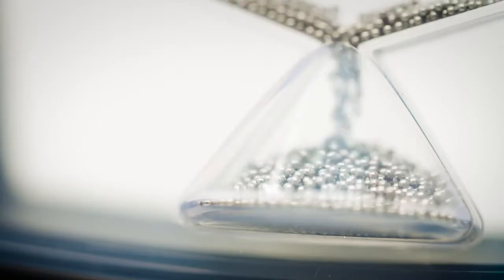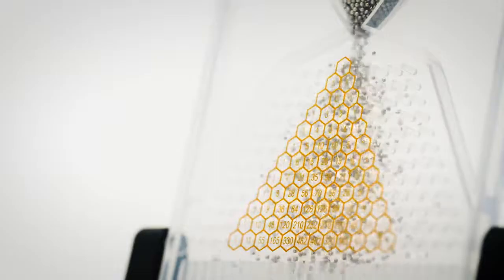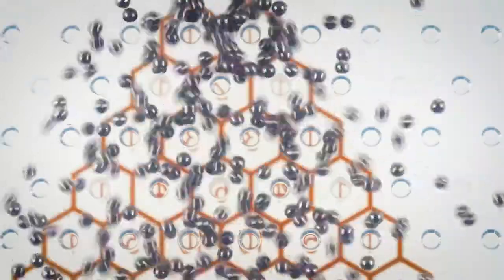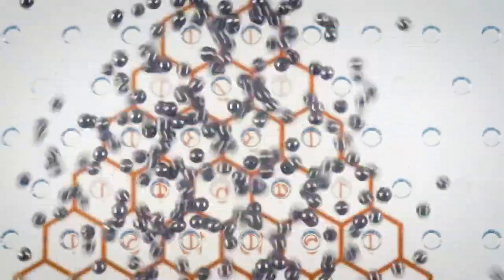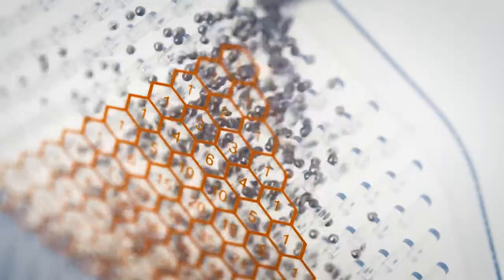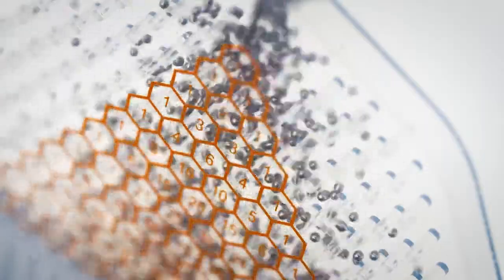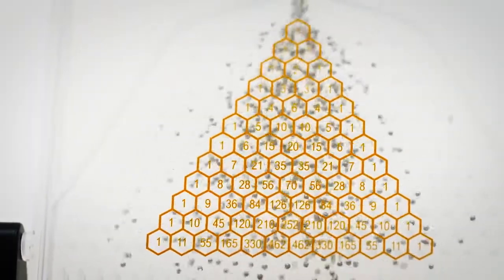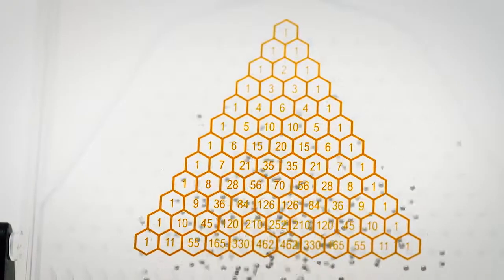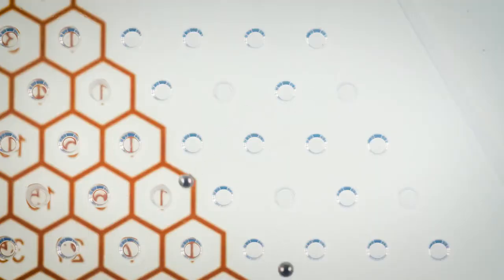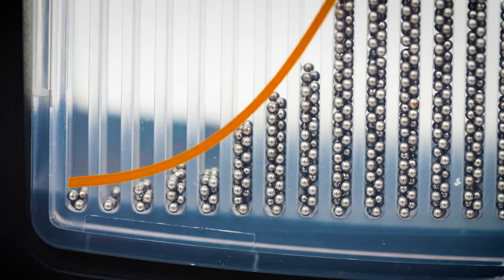The distribution forms as beads navigate their way through a forest of pegs, arranged so that each time a bead hits a peg, it's randomly deflected to the left or the right with equal likelihood. This means there are many different possible paths a bead can take before it exits the pattern and comes to rest in one of the bins below.